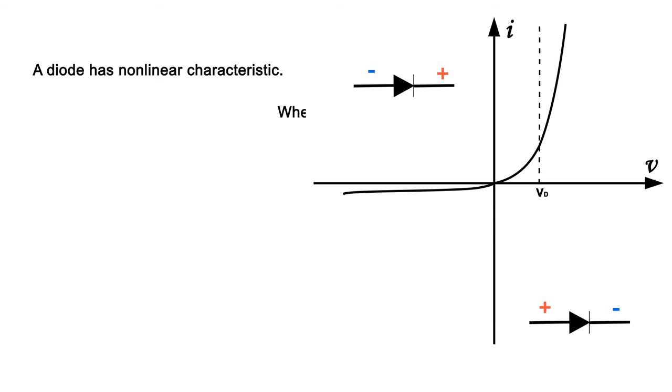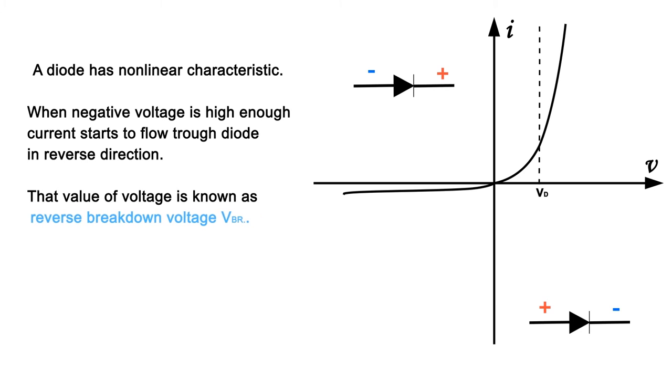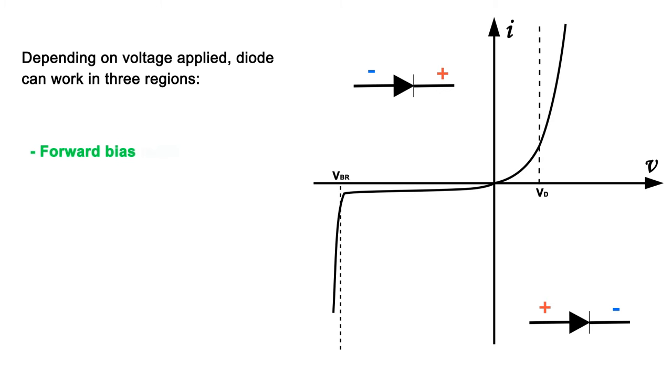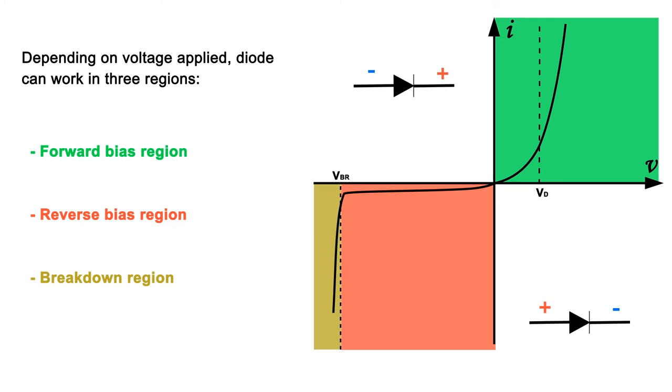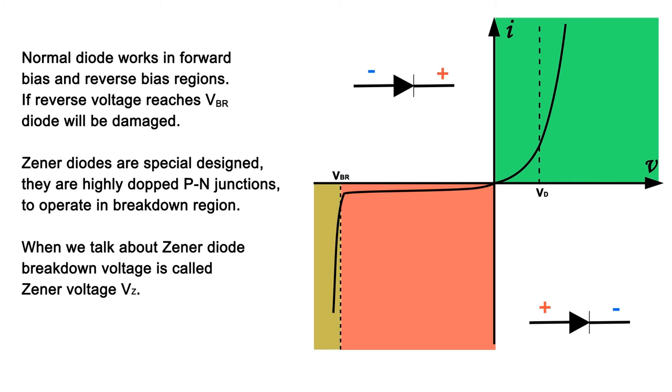When negative voltage is high enough, current starts to flow through diode in reverse direction. That value of voltage is known as reverse breakdown voltage VBR. Depending on voltage applied, diode can work in three regions: forward bias region, reverse bias region, and breakdown region. Normal diode works in forward bias and reverse bias regions. If reverse voltage reaches VBR, diode will be damaged.